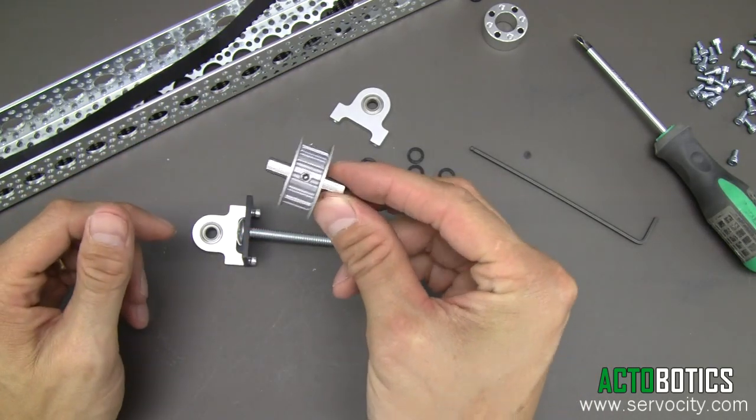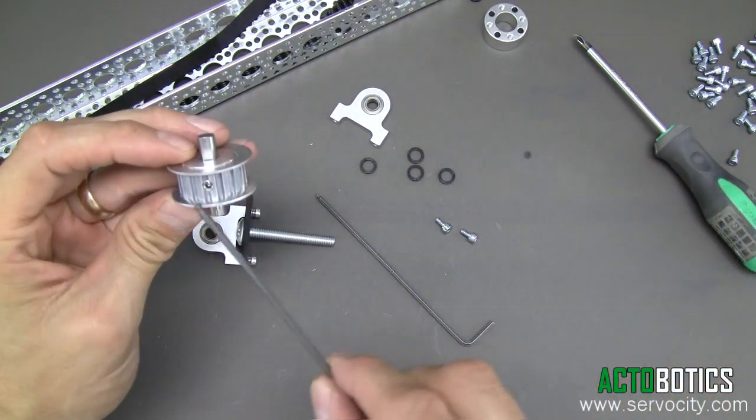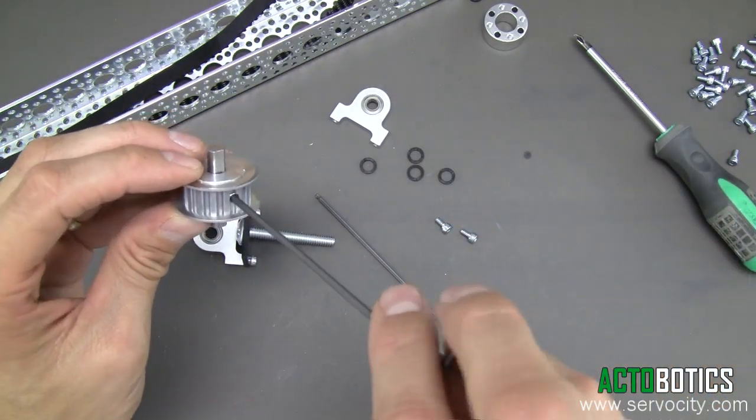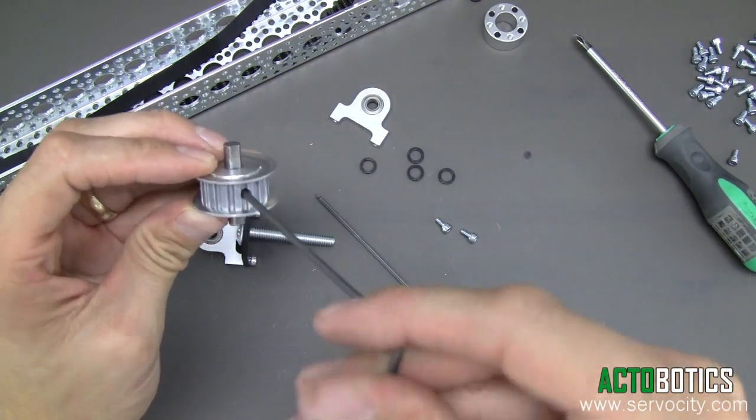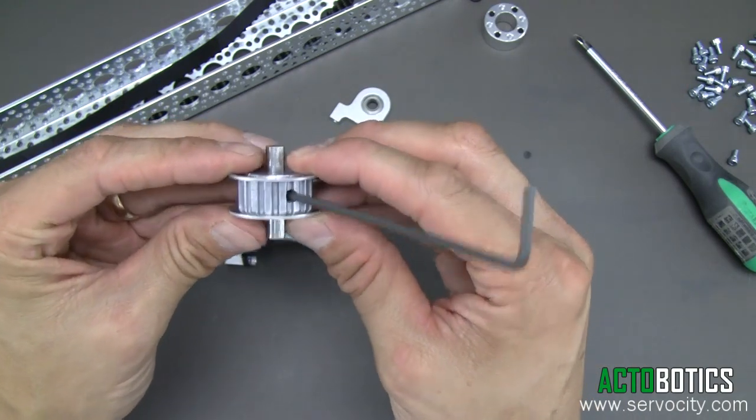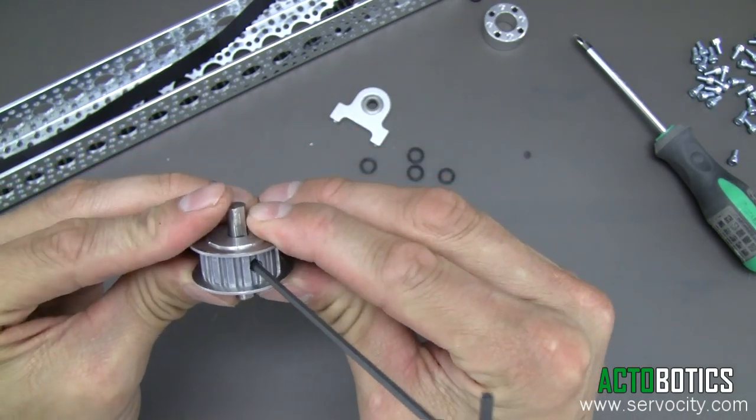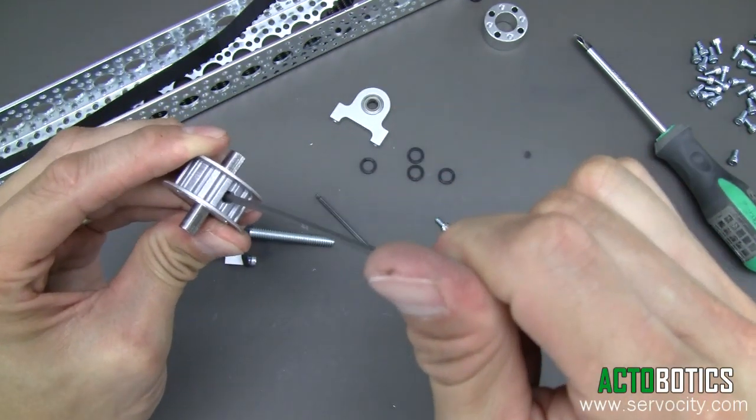We're going to put that right through the pulley and align it with the flat and the shaft. Run that set screw all the way down and make sure that shaft is pretty much right in the middle. You'll have a little wiggle room later during final assembly, but go ahead and tighten that down.